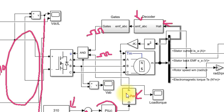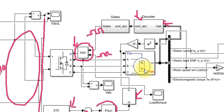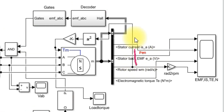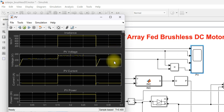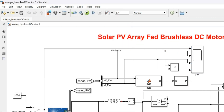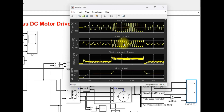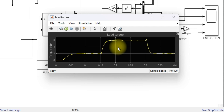The gating pulse and the PWM pulse are combined by means of an AND gate, and then we finally generate the pulse for the voltage source inverter to convert the DC into a suitable form for the DC motor. This automatically controls the speed and torque of the machine. Here we have different scopes: one for measuring radiation, PV voltage, PV current, and PV power; one for measuring back EMF, stator current, electromagnetic torque, and motor speed; and one for measuring the load torque of the BLDC motor.